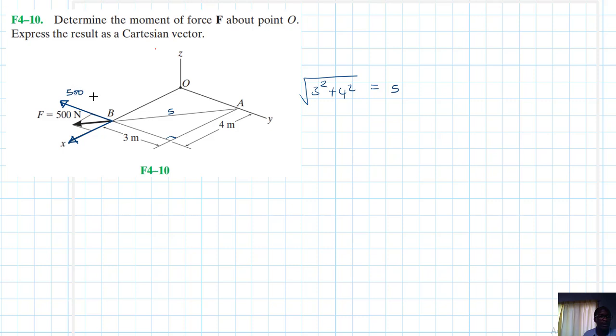Therefore components of this: we have 500 along the y-axis, we have 3 divided by 5, then we have 500 along the x-axis which is 4 divided by 5.